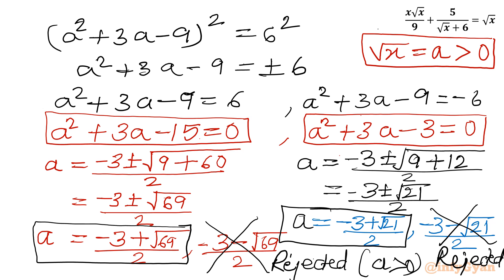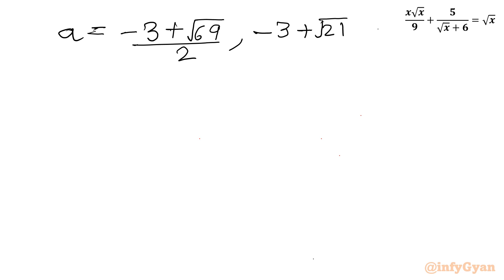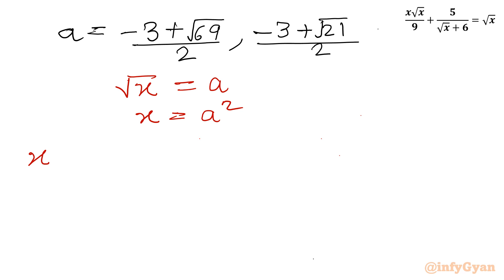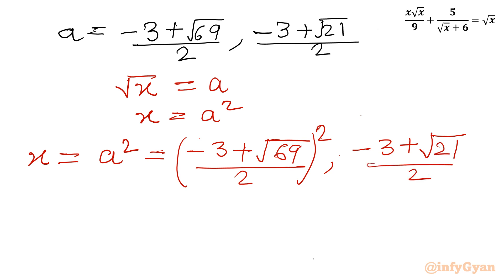Let us write both accepted values of a. The first is a equals (minus 3 plus √69) divided by 2, and the second is a equals (minus 3 plus √21) divided by 2. Since x equals a², squaring each: x equals ((minus 3 plus √69) over 2)² and x equals ((minus 3 plus √21) over 2)².